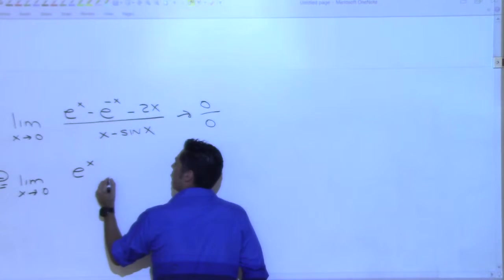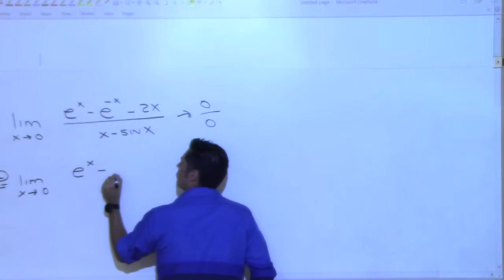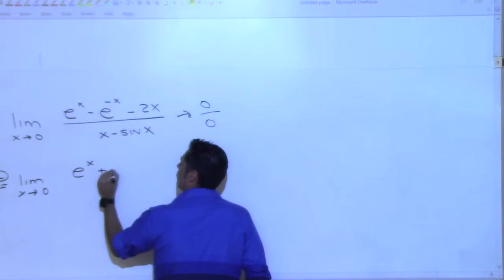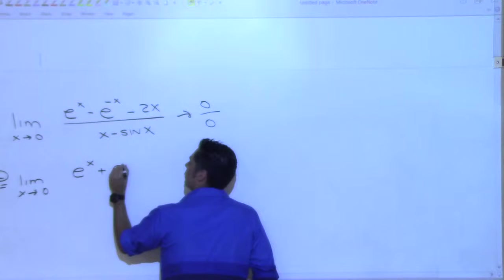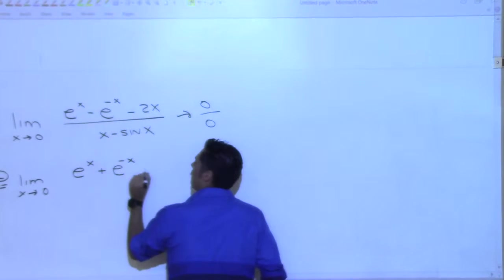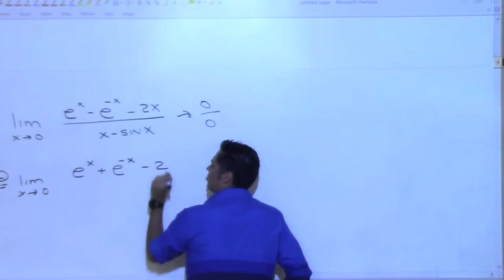E to the x, times one... plus e to the negative x, minus two.